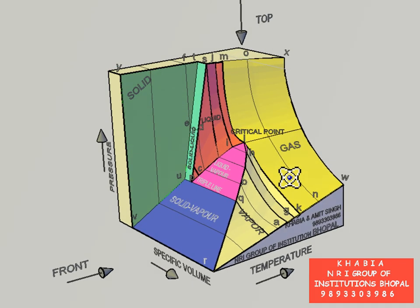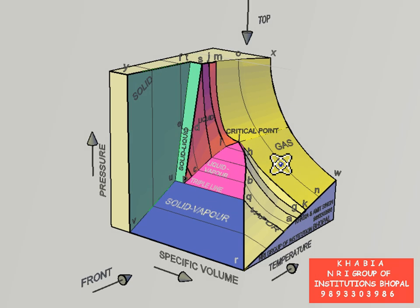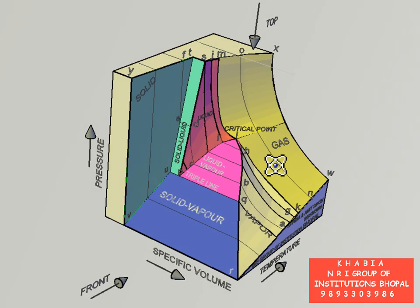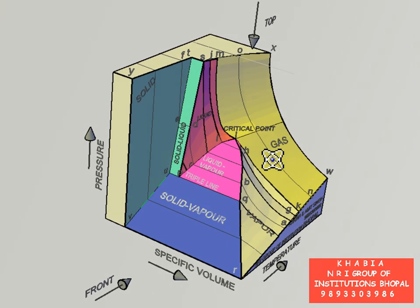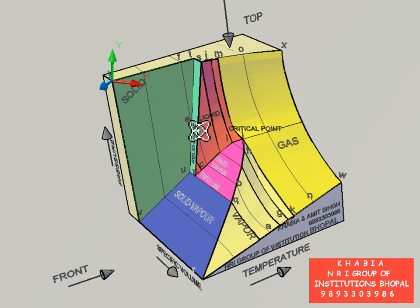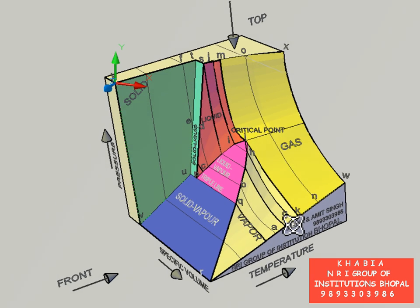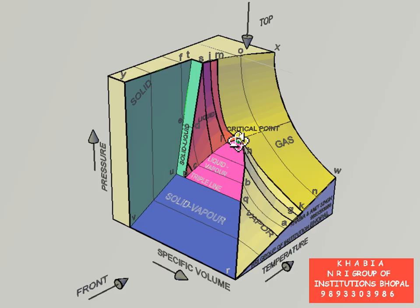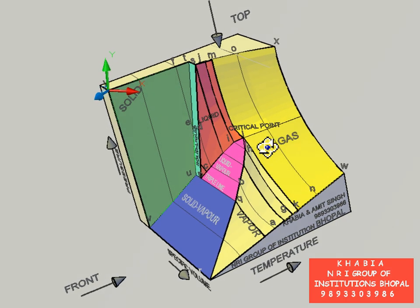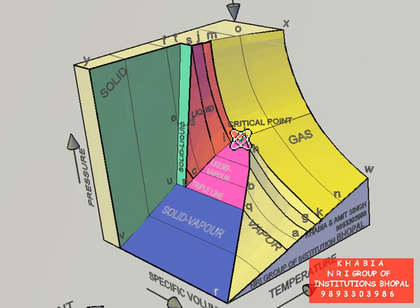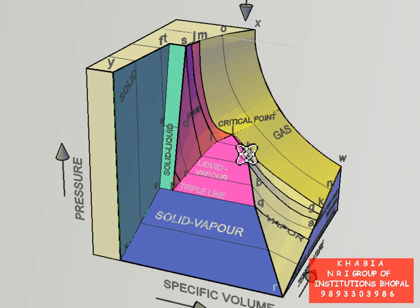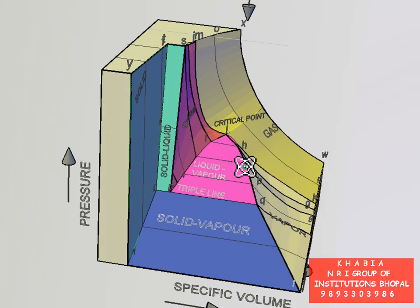Lines of constant temperature plotted on the PVT surface are called isotherms. On the 3D model you can see isotherm ABCDEF, isotherm GHIJ, and isotherm KLM. The line OLICP is called the saturated liquid line, and LHBQ is called the saturated vapor line.